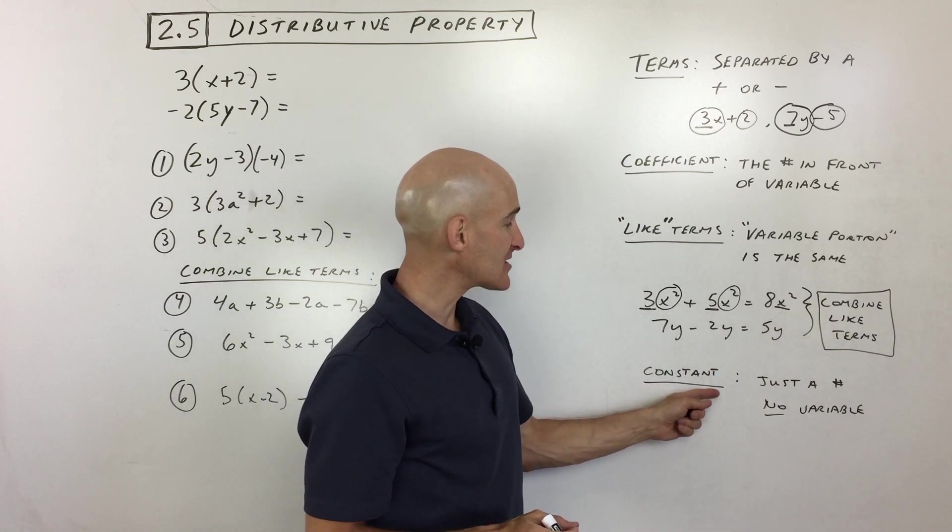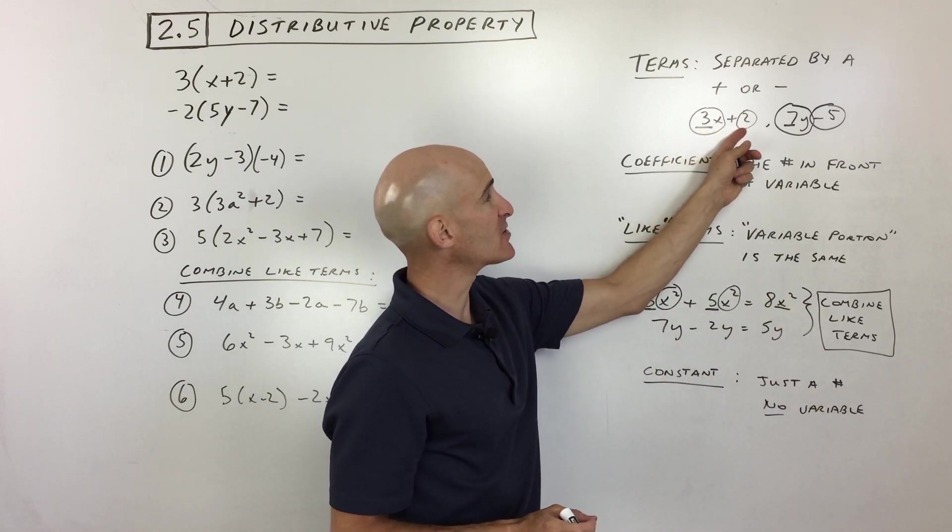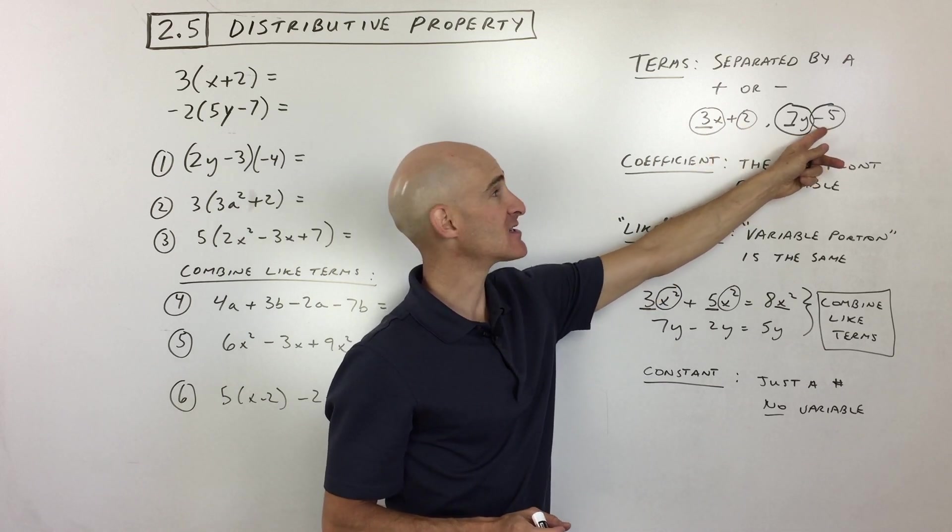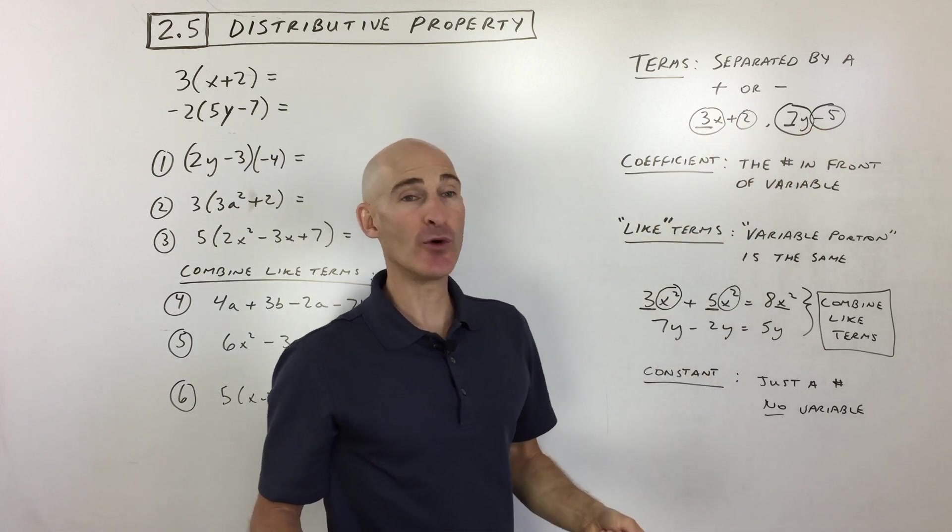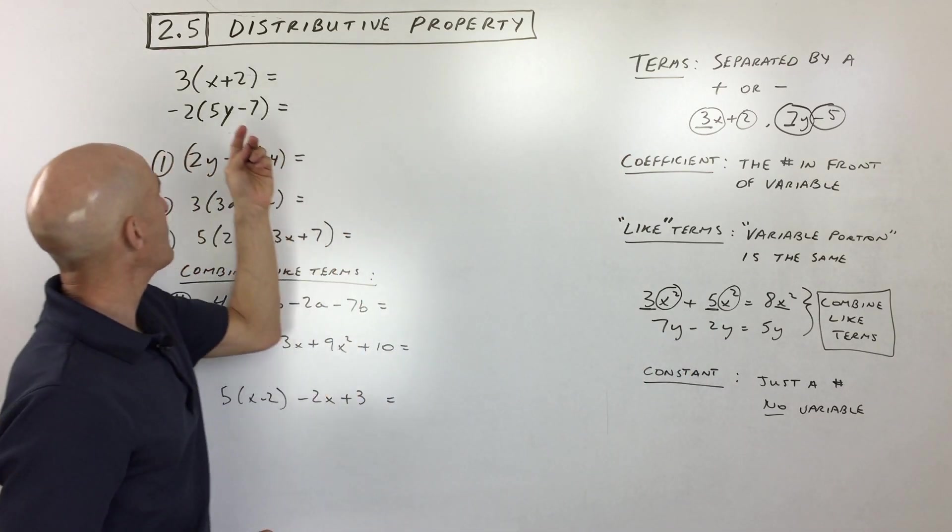And then lastly, the constant, it's just a number, no variable. So for example, over here, 3x plus 2, 2 would be the constant or negative 5 would be the constant. It doesn't have a letter, a variable. So definitely something to review and know those terms, because you'll see those coming up in algebra.